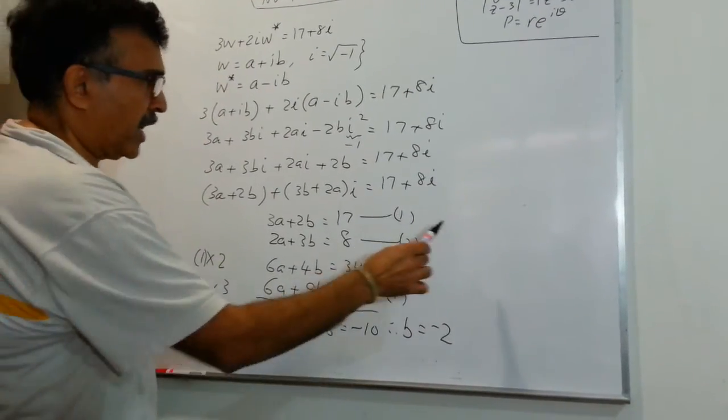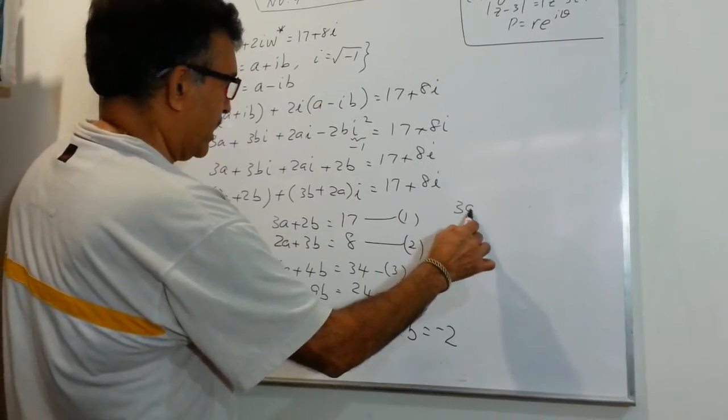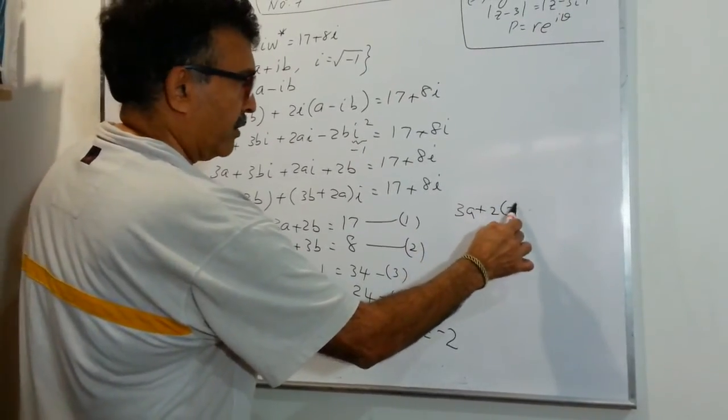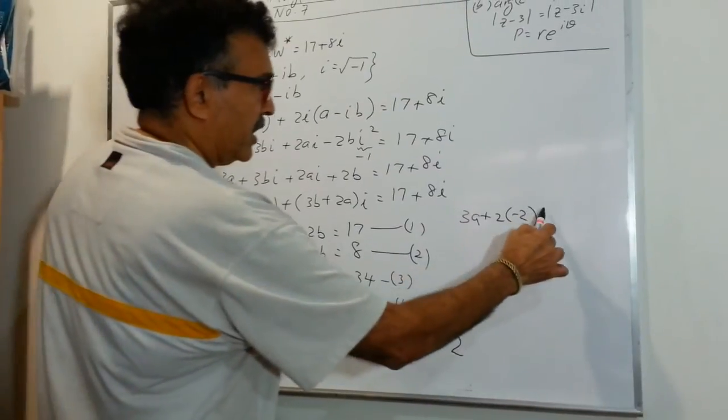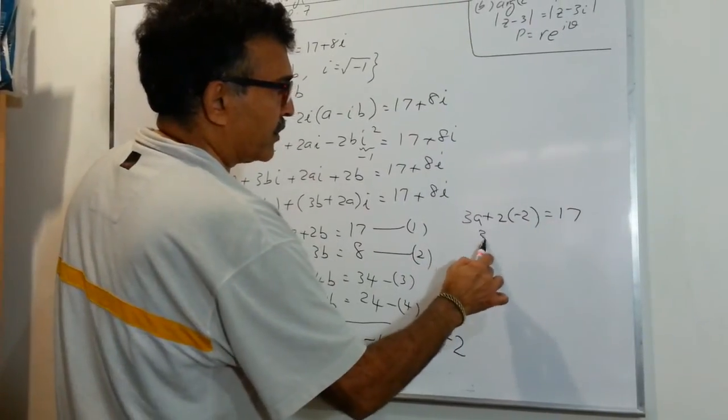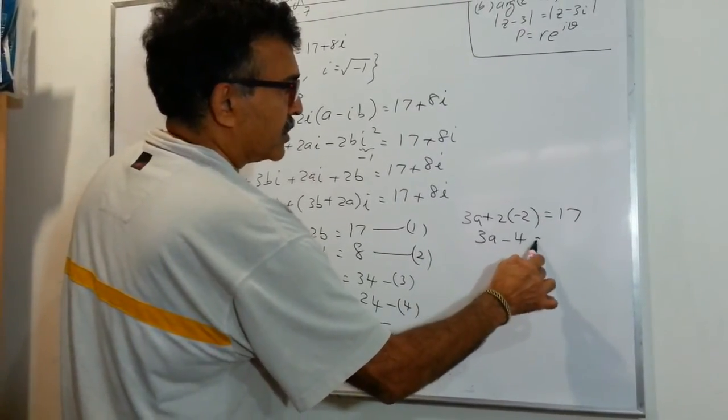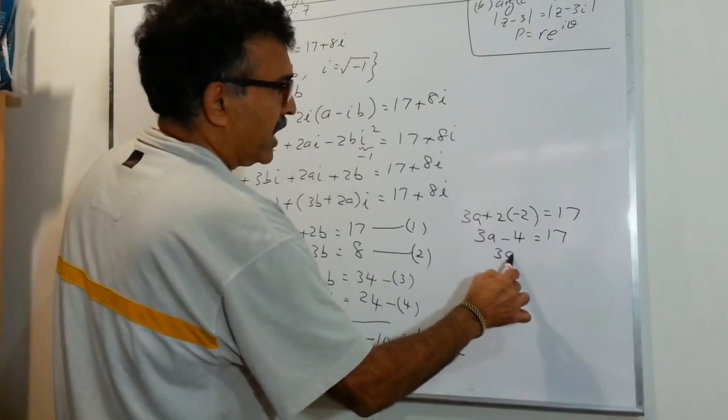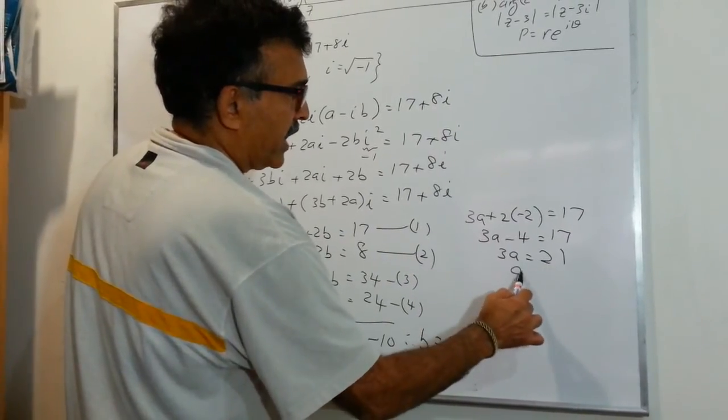So let's plug into equation 1. We have 3A plus 2 times negative 2 equals to 17. So I have 3A minus 4 equals to 17. I have 3A equals to 21 and A equals to 7.